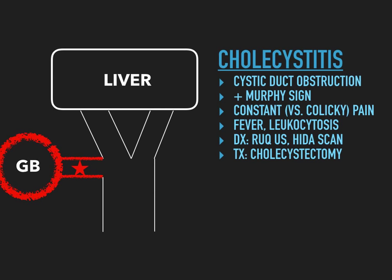In cholecystitis, the patient will have constant pain — it's not colicky. It doesn't come and go like in cholelithiasis; it's constant because the gallbladder is always inflamed. In cholelithiasis, the stones are churning around and the colicky pain comes and goes based on stone position. But in cholecystitis, the stone is blocking the cystic duct, the gallbladder is contracting against an obstruction — that's why it's inflamed and why there's constant pain.